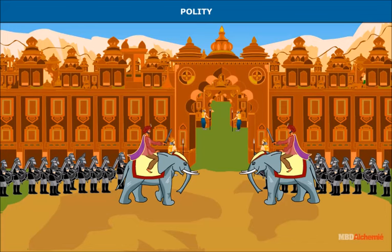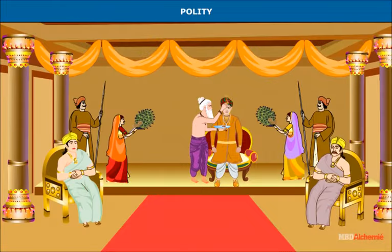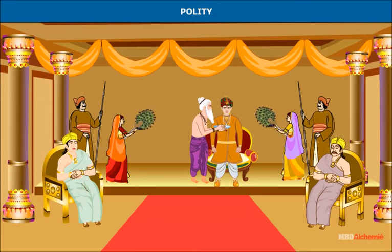The status of the king: The Brahmins accepted the king to be the most powerful in administration. They said that the king was not like an ordinary man and asked people to regard him as a godlike power on earth. They also performed certain ceremonies to glorify the king's position.